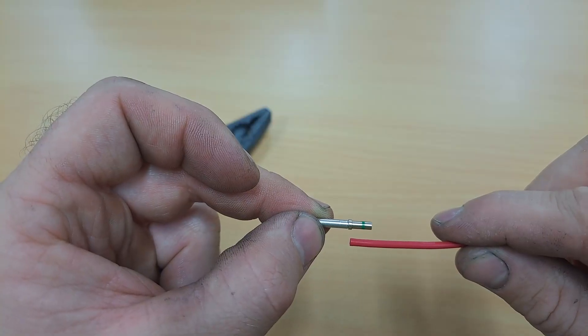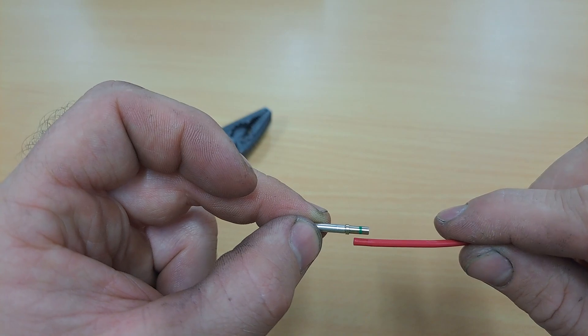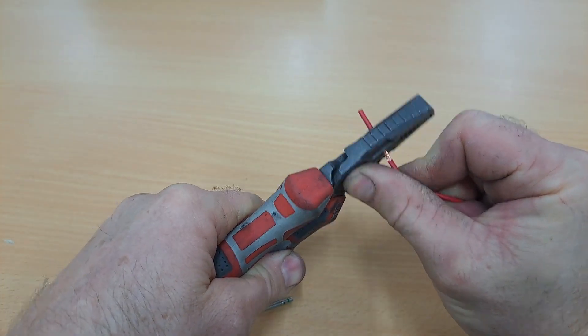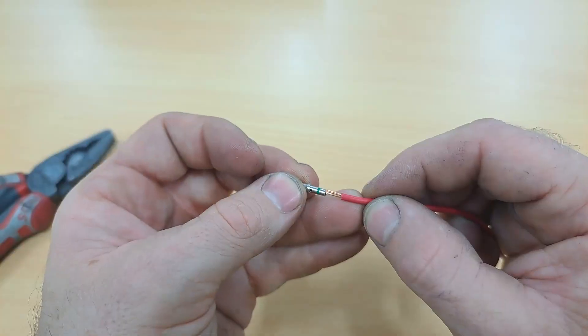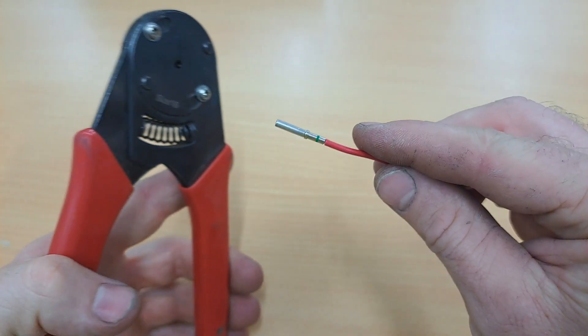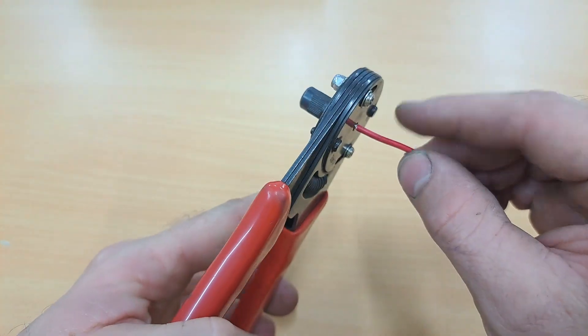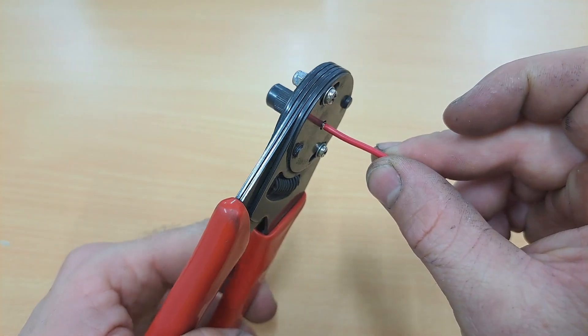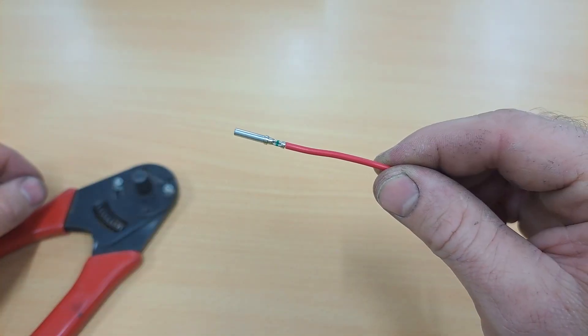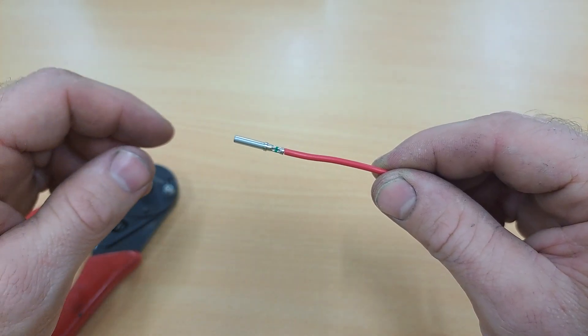We want to strip the cable to take up the whole space of the green striped area. Now get the crimper and crimp the connection. Make sure it goes all the way in. Once it is crimped pull on it to make sure that it is firm and in place.